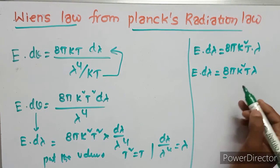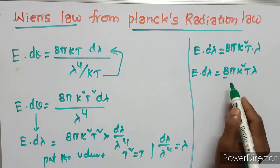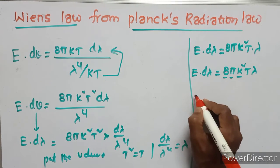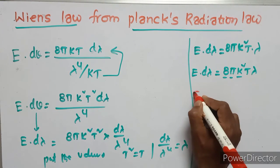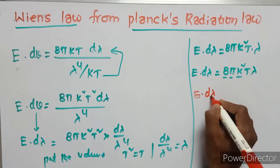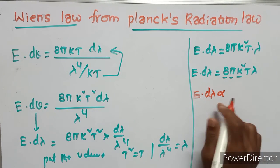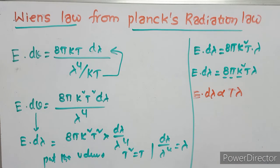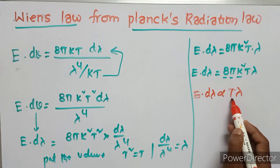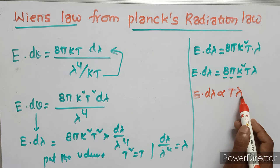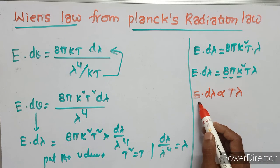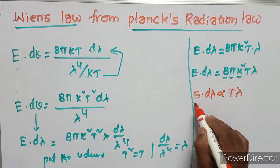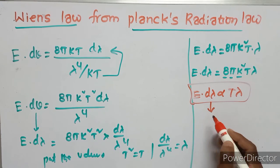In this expression, 8 is a number, pi is a constant, and k is the Boltzmann constant. Therefore, this equation can be written as E·d_lambda is proportional to T·lambda — meaning the product of absolute temperature and wavelength equals energy times d_lambda. This is Wien's displacement law.